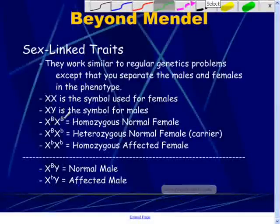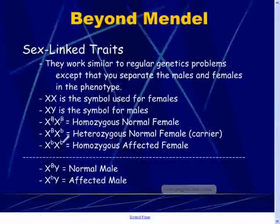X capital B, X capital B is going to be homozygous normal female. So whatever trait or disease we're talking about, this individual has two capital Bs. That means they're normal. The XX means that this is a female.